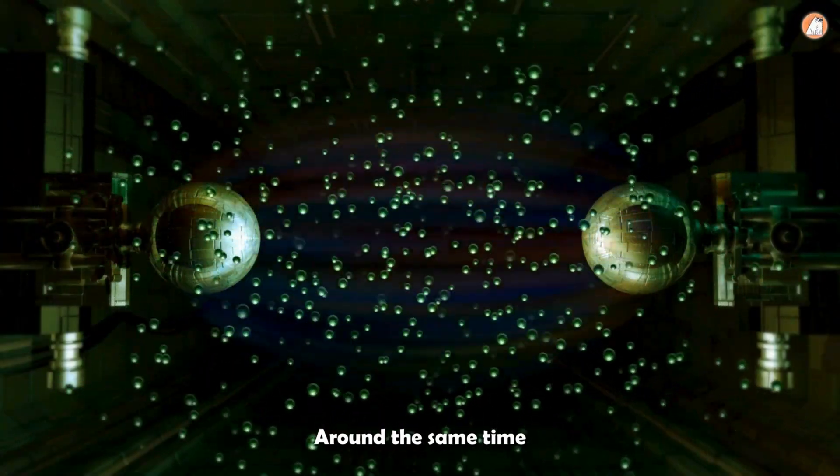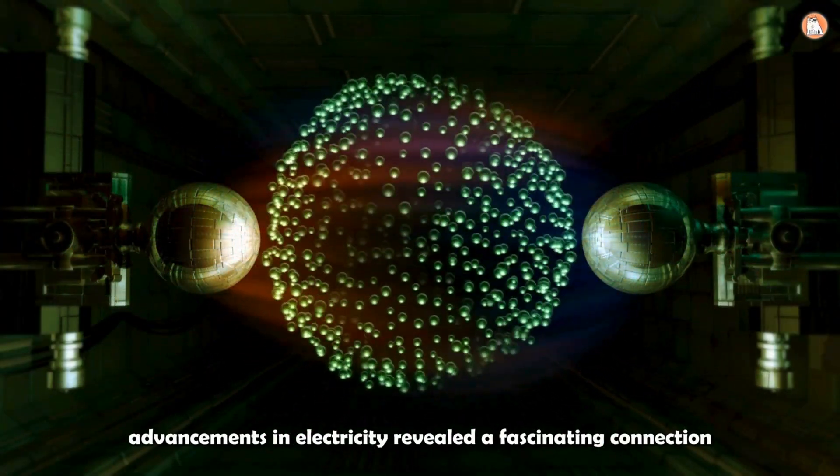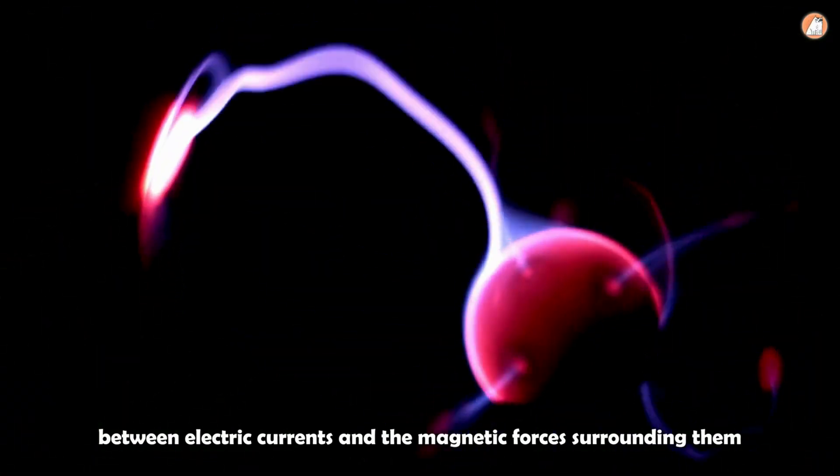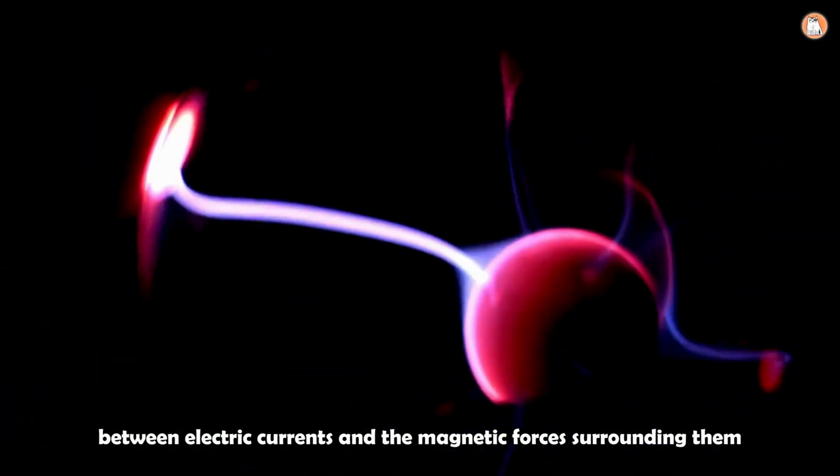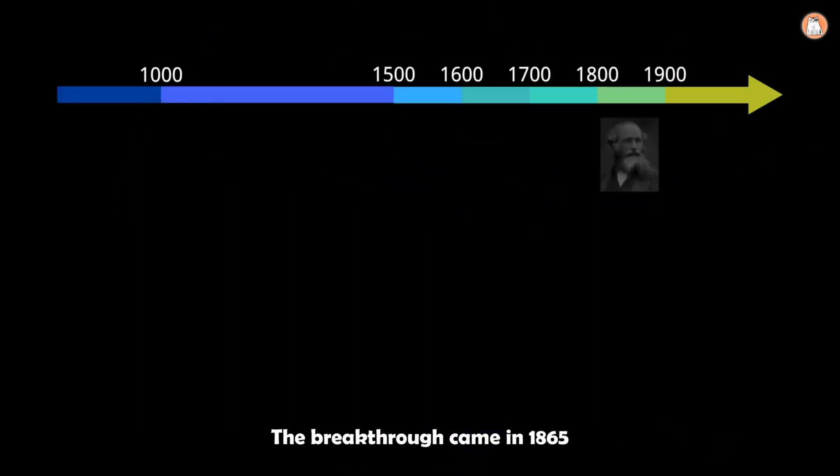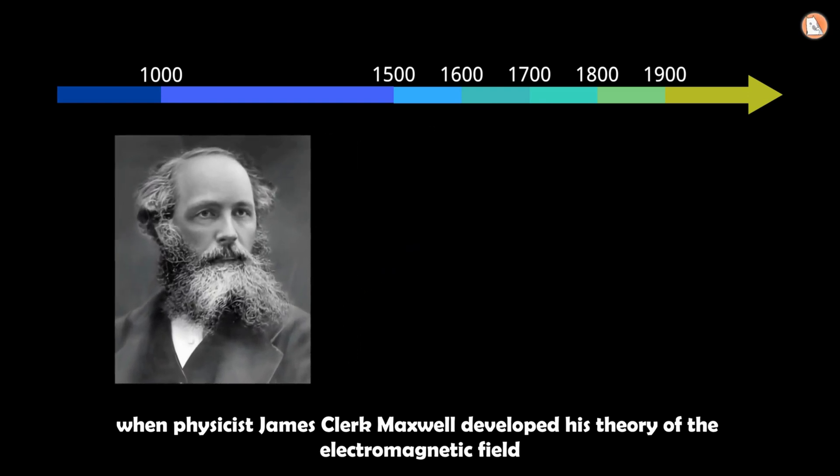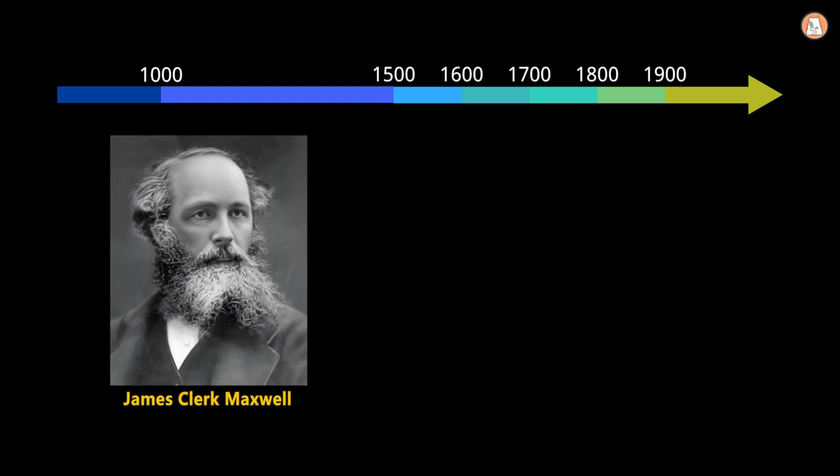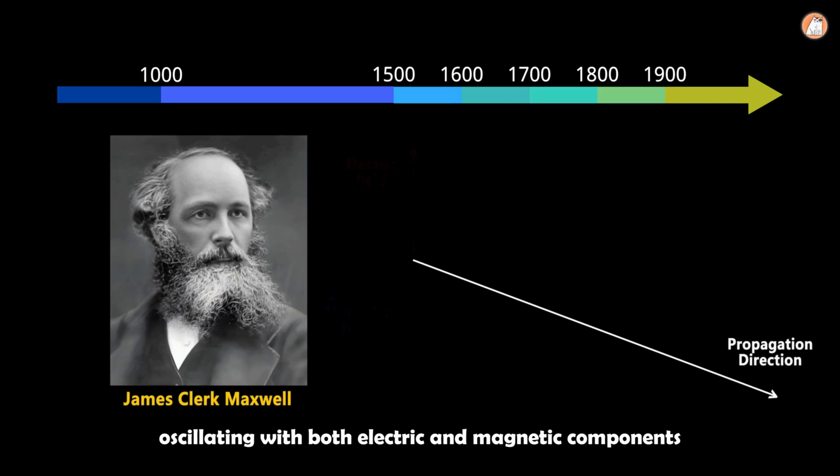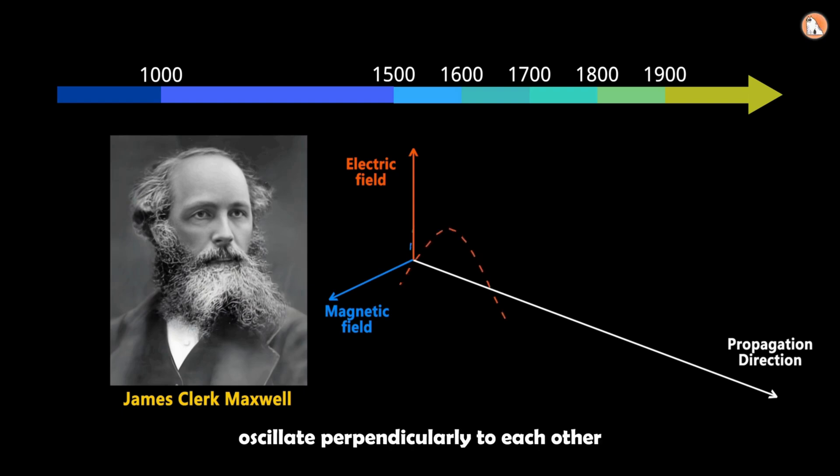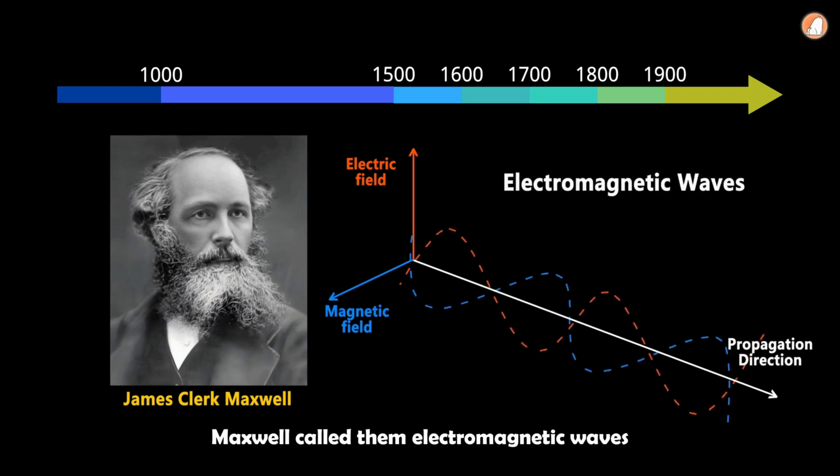Around the same time, advancements in electricity revealed a fascinating connection between electric currents and the magnetic forces surrounding them. The breakthrough came in 1865, when physicist James Clerk Maxwell developed his theory of the electromagnetic field. Maxwell proposed that waves could exist in space, oscillating with both electric and magnetic components. These fields, he discovered, oscillate perpendicularly to each other and to the direction of the wave's motion. Maxwell called them electromagnetic waves.